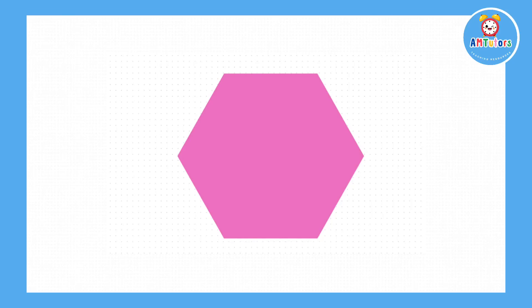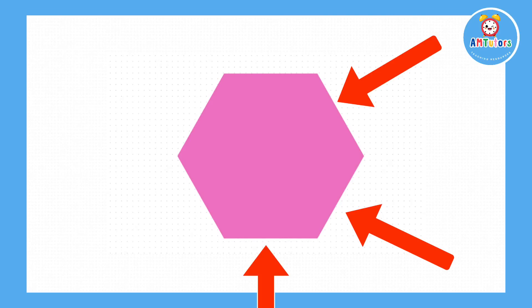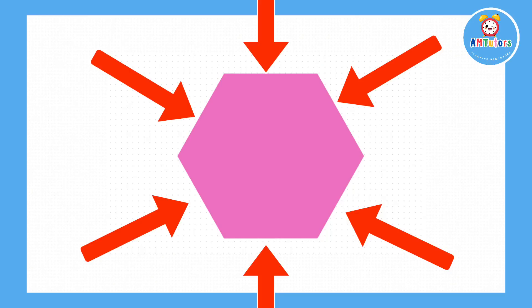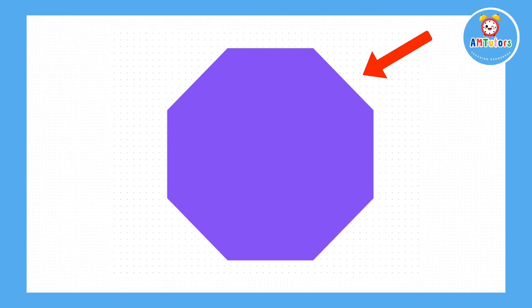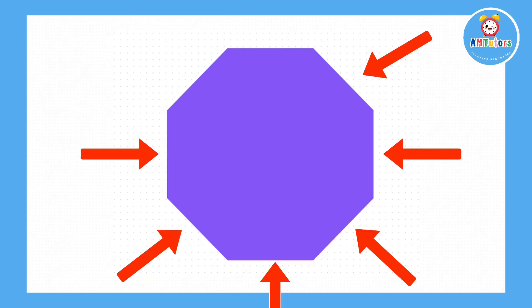How many edges does this hexagon have? The hexagon has six edges. How many edges does this octagon have? The octagon has eight edges.